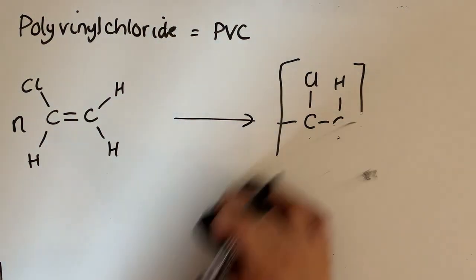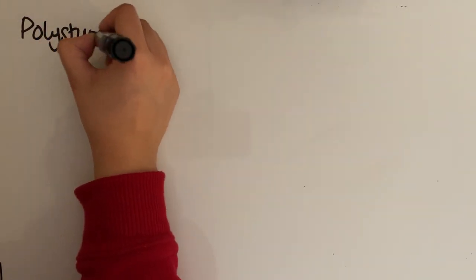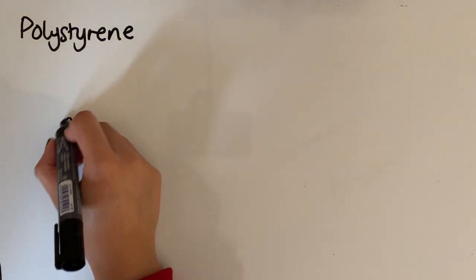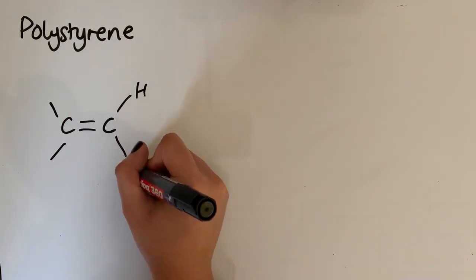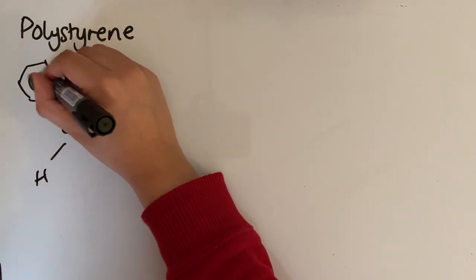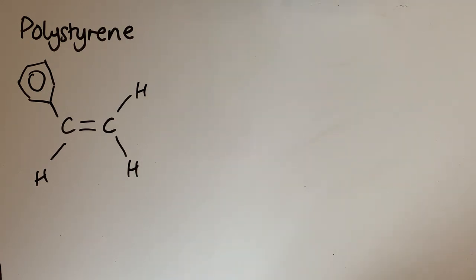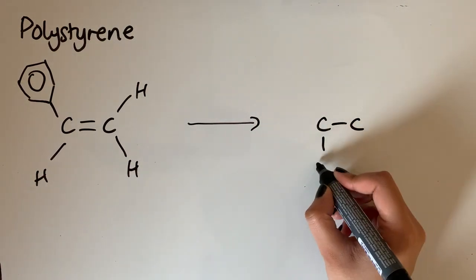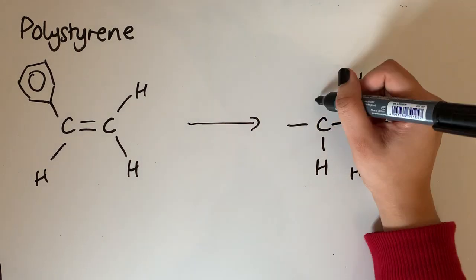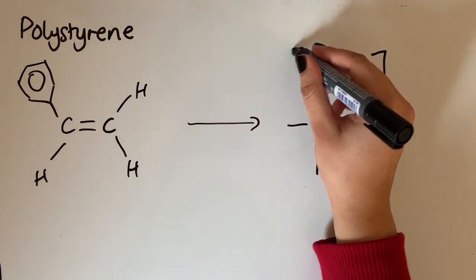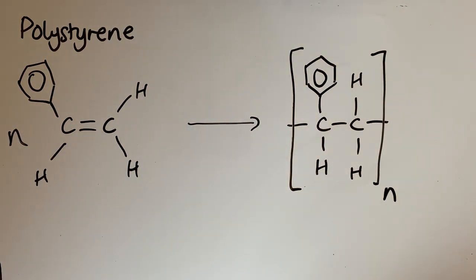Another polymer is polystyrene, which is used in packaging, polystyrene cups, or food containers. The monomer looks like an ethene unit with a benzene ring attached — that molecule is called styrene. Drawing a repeat unit of polystyrene gives a structure with the benzene ring coming off the carbon backbone. Remember to balance the equation using N's.